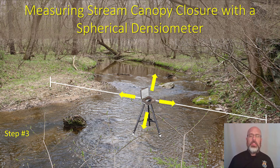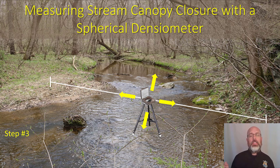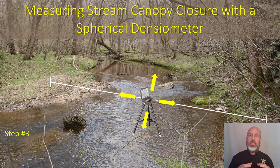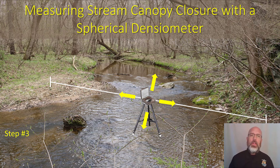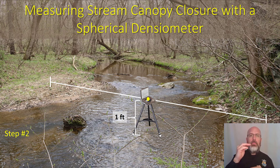The second reason we use a tripod is that we're going to take measurements in four different directions: directly upstream, directly downstream, directly to the left descending bank, and directly to the right descending bank. As you make those 90-degree turns, it's important that the densitometer stay in the same spot the whole time, so a tripod is helpful. The third reason is that you want to stay a consistent distance above the water level — most protocols recommend one foot above the water surface.